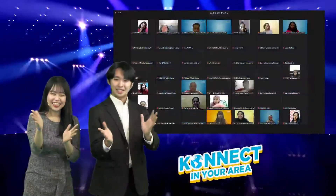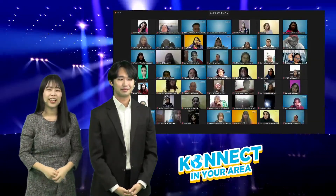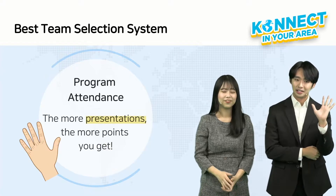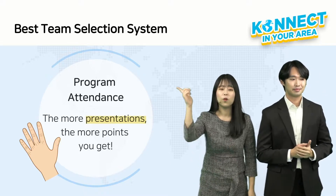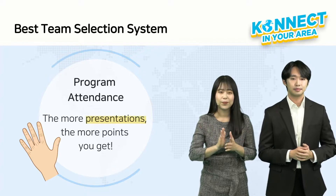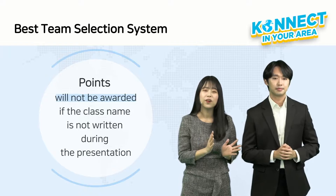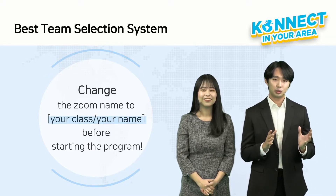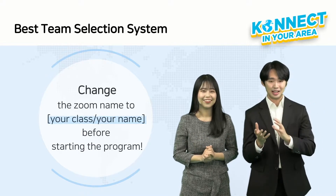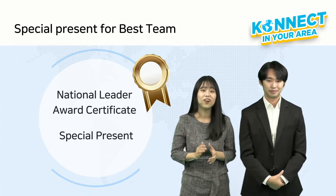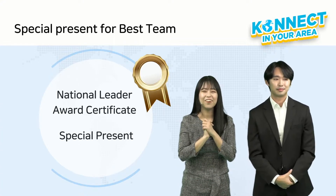In Connect Season 2, there is a new system: Best Team Selection! Only one team is selected as the excellent team, and points are awarded to the class of students who raise their hands and present during the main program. Points will not be awarded if the class name is not written during the presentation. Please remember to change your Zoom name to 'your class / your name' before starting. Also, extra points are given to classes with many students who have their cameras turned on. The outstanding team will receive a National Leader Award Certificate and a special present from Connect!